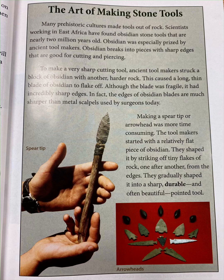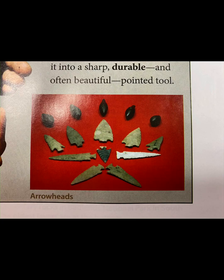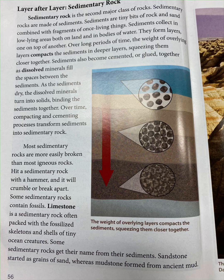Although the blade was fragile, it had incredibly sharp edges — in fact, much sharper than the metal scalpels used by surgeons today. Making a spear tip or arrowhead was more time consuming. Tool makers started with a relatively flat piece of obsidian and shaped it by striking off tiny flakes of rock one after another from the edges, gradually shaping it into a sharp, durable, and often beautiful pointed tool.